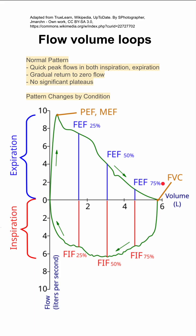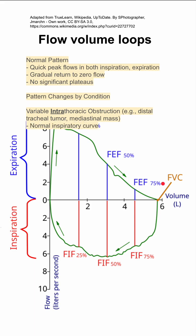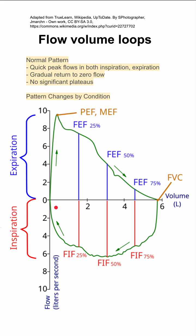There are some pattern changes with pathological conditions worth knowing. If you have a variable intrathoracic obstruction — such as a distal tracheal tumor or a mediastinal mass — you'll have a normal inspiratory curve but a plateaued expiratory curve with decreased flow. Your expiratory curve will have a plateau and doesn't reach the peak expiratory flow. So: normal inspiratory curve with a plateaued expiratory curve.